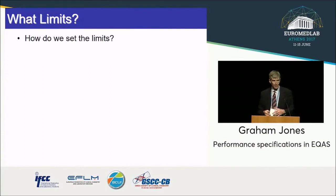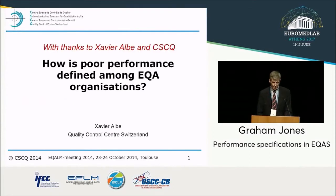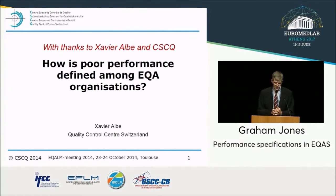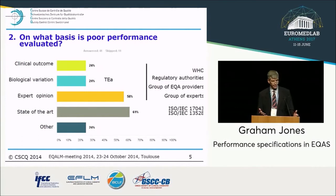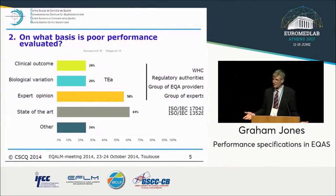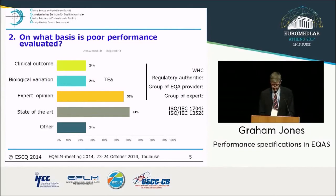So we know there are lots of different limits and many things that can be taken into account to set them. A survey by Avia Alba from EQAM, run out of Switzerland, looked at the criteria that different European EQA organisations have used to set their performance specifications. Of 29 respondents, some use clinical outcome, some use biological variation, some use experts, some use state-of-the-art. Is it a surprise they're different? No — it's absolutely expected, because we're applying different criteria to decide whether something is inside or outside the limits.